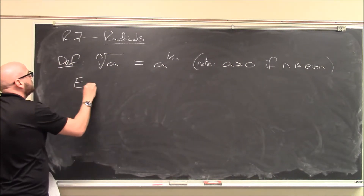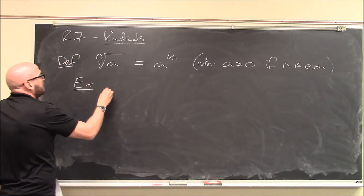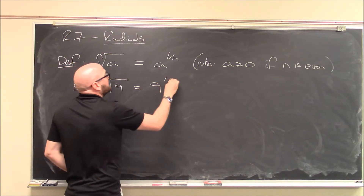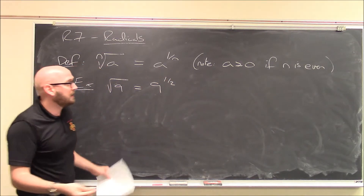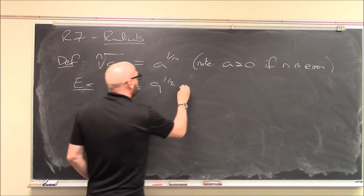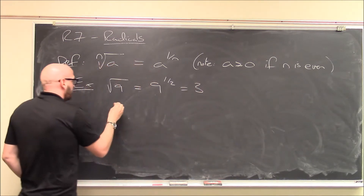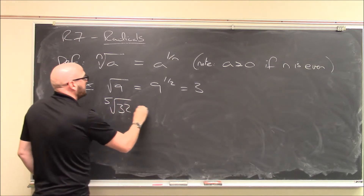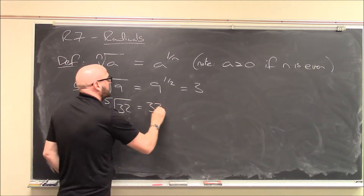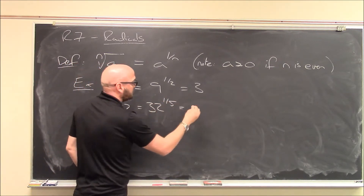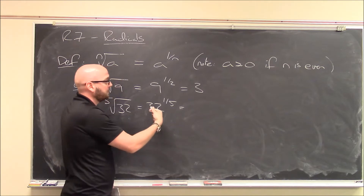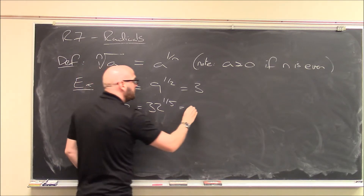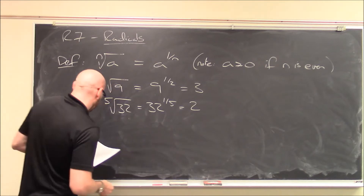For example, the square root of 9 — we'd usually write that as 9 to the 1/2. And the square root of 9 is, of course, 3. The fifth root of 32 — that's 32 to the 1/5. What do you multiply by itself 5 times to get 32? It's 2.